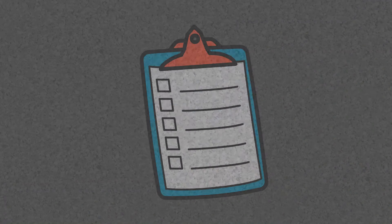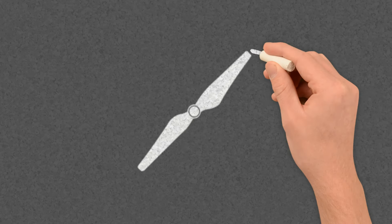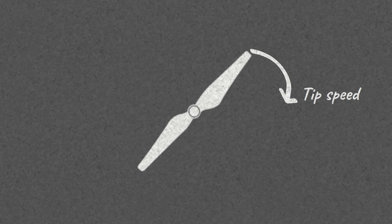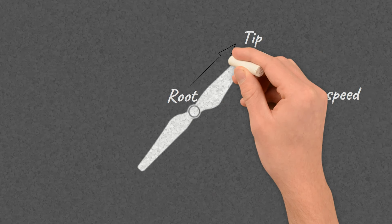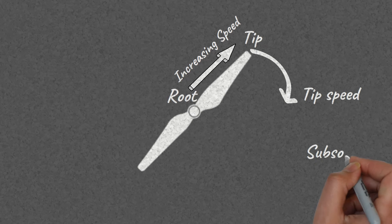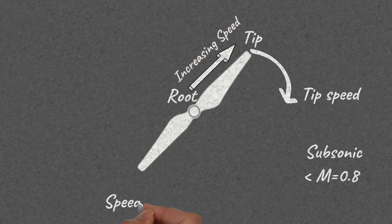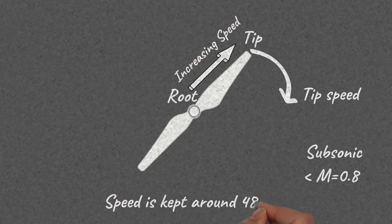Let's begin with the four basic facts that apply to all propeller types. The limiting factor of a propeller is the tip speed. The speed at which the propeller cuts through the air increases as we go from the root to the tip. The tip speed is kept subsonic — below Mach 0.8 — to avoid the formation of shock waves, which significantly increase drag and noise. In most cases it's kept around 480 mph or 770 km/h, which is about Mach 0.6.